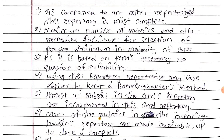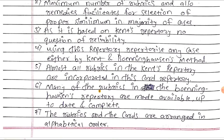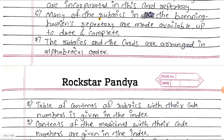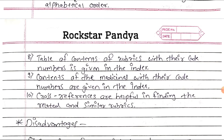Using this repertory, we can repertorize any case either by Dr. Kent's or Boenninghausen's method. Almost all rubrics in the Kent repertory are incorporated in this card repertory, and many of the rubrics in the Boenninghausen's repertory are made available, up to date and complete. The rubrics and the cards are arranged in alphabetical order. The table of contents of rubrics with their code numbers is given in the index, and the contents of the medicines with their code numbers are also given in the index. Cross references are helpful in finding related and similar rubrics.